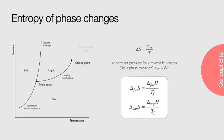The entropy of this phase change is the energy provided as heat, divided by the temperature this transition occurs at. And, if we are under constant pressure conditions, and because the heat is provided reversibly, this energy provided as heat is the enthalpy change. Consequently, the entropy change during a phase change is the enthalpy of that phase change, divided by the temperature of that phase change.